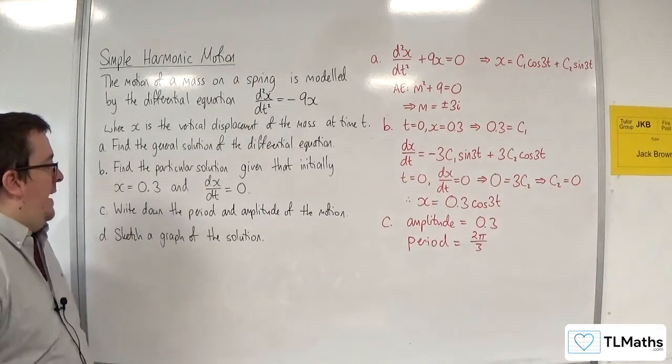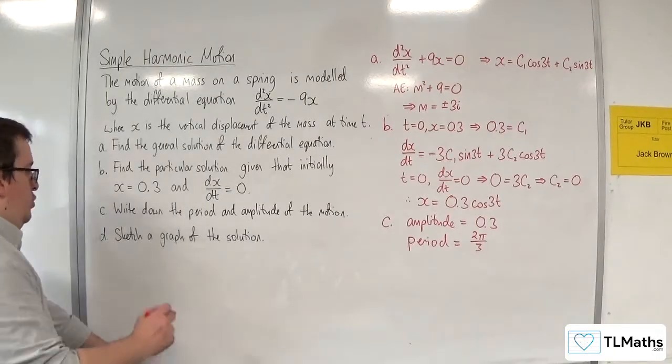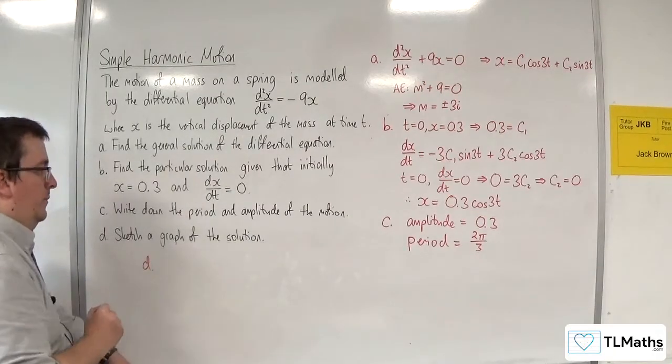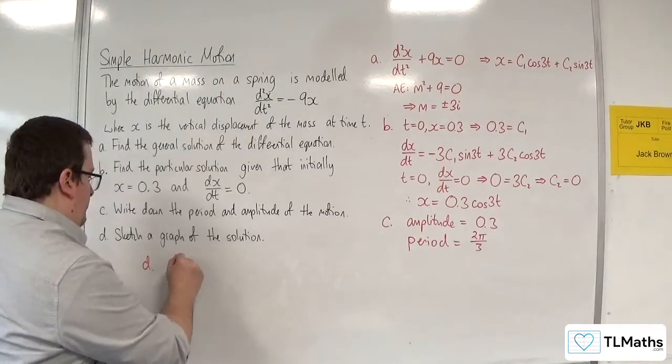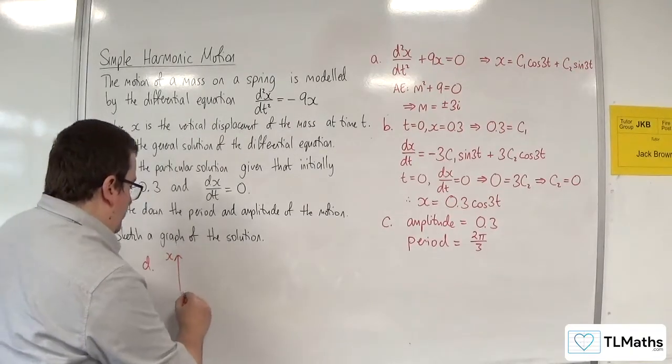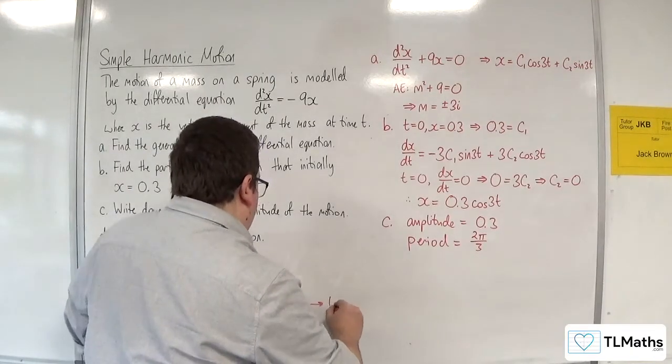Then part D, sketch a graph of the solution. So the vertical axis is x, the horizontal axis is t.